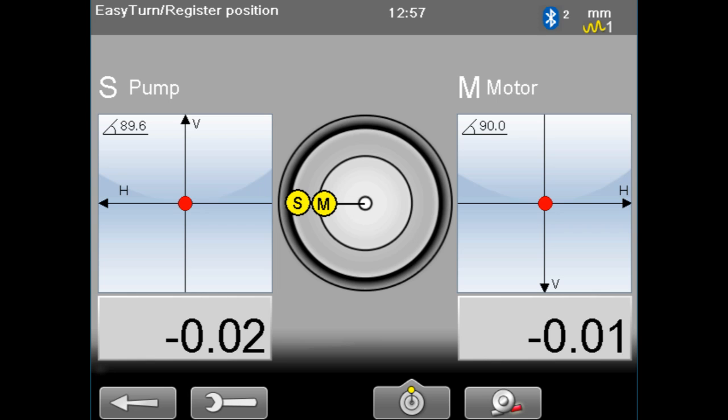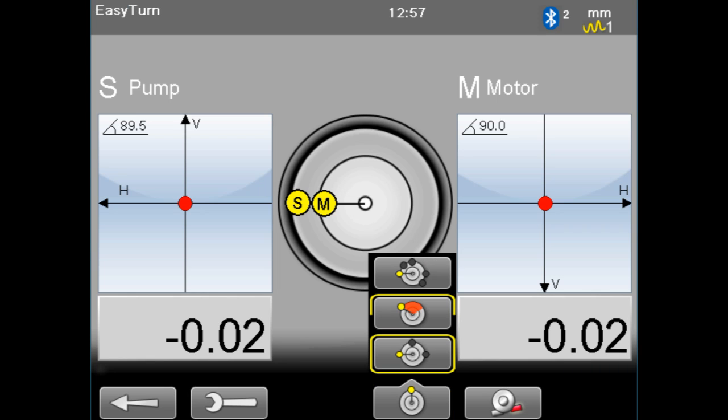The program will start off in easy turn mode as a default. To change this, push the selector and choose multipoint.